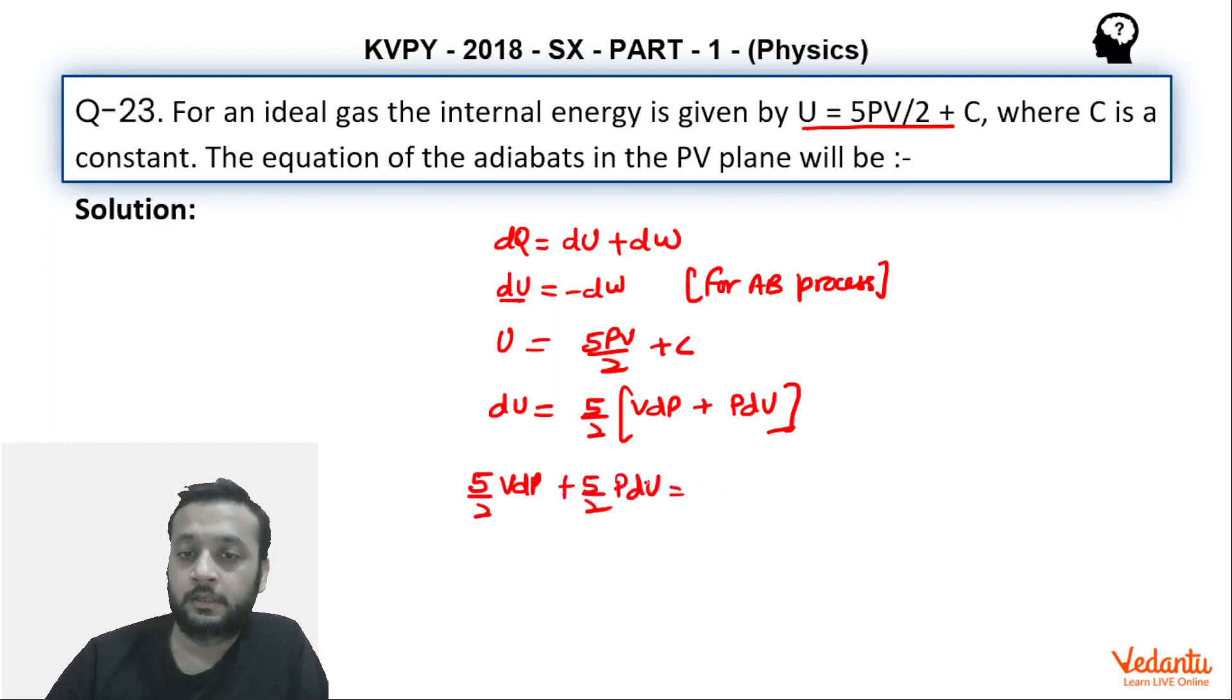So from here we get 5/2 VdP is equals to minus 7/2 PdV. By 2 by 2 will be gone, so we can integrate this.